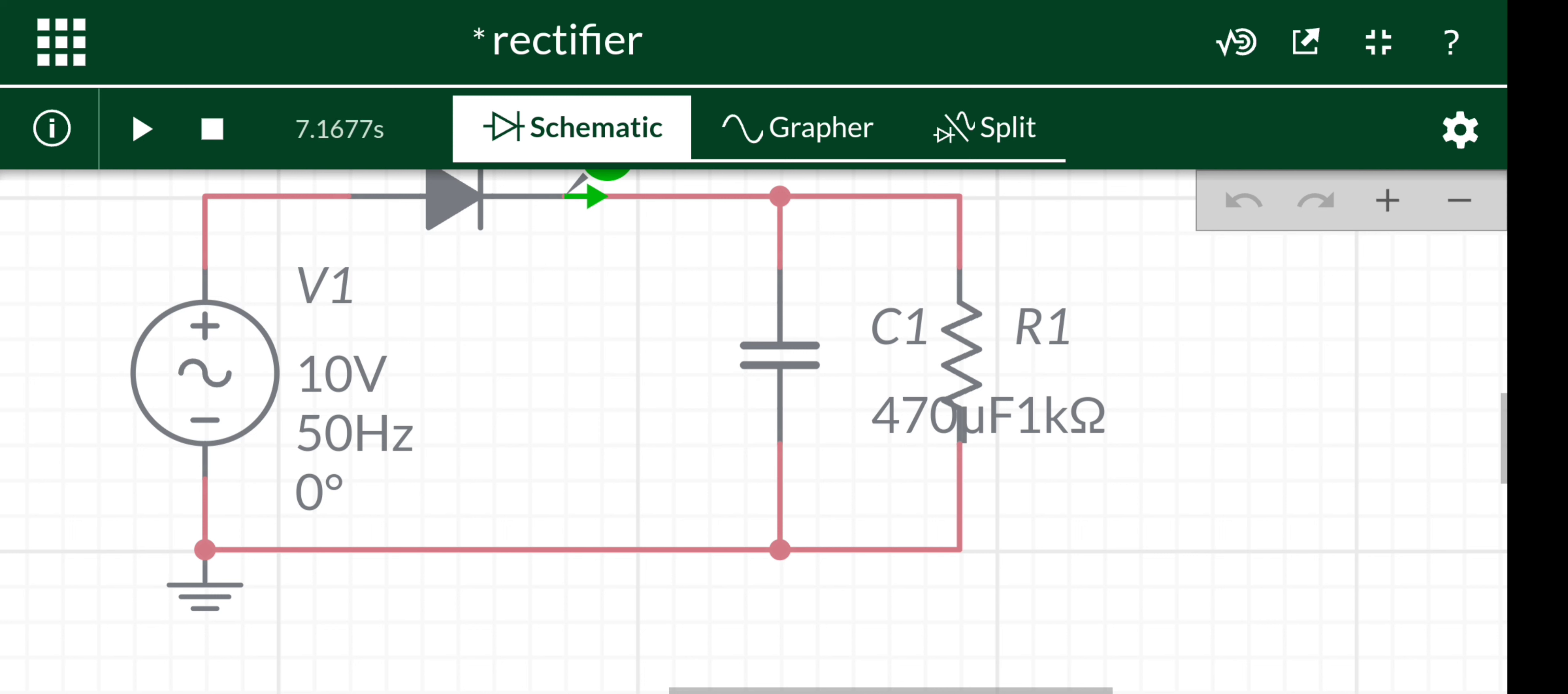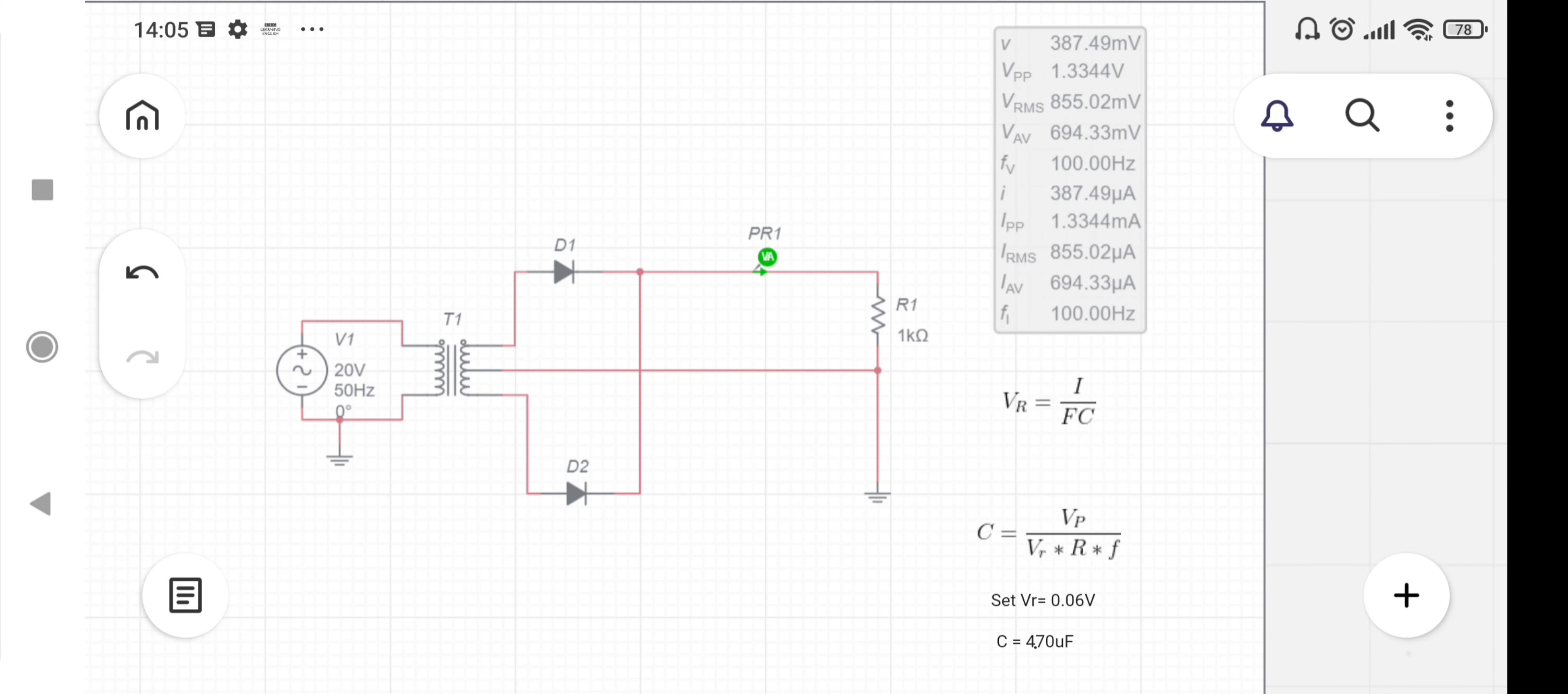The next circuit is a two-diode full-wave rectifier circuit with a center-tap transformer and voltage source V1 with 20 volts peak and 50 Hertz frequency.